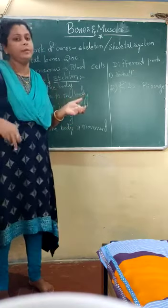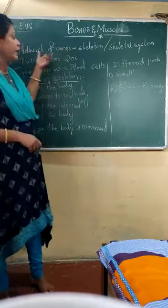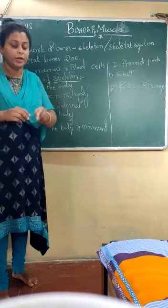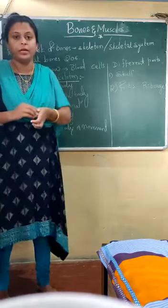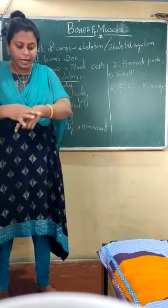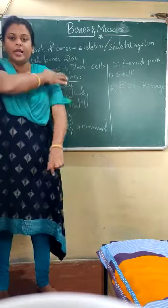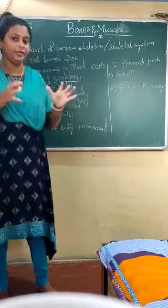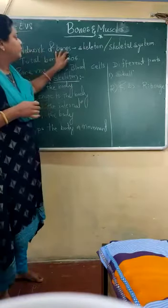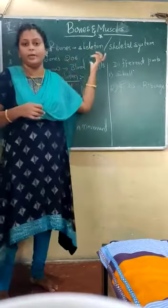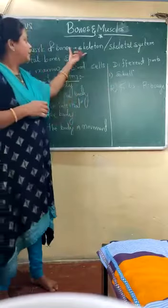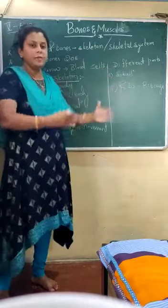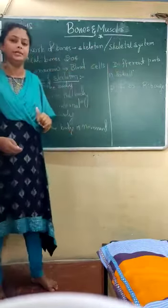The body is made up of different types of bones, and those bones are just like a network. They are attached — one bone is attached to another bone and another bone is attached to another. The bones are going to form a network-like structure. The network of bones is called the skeleton. The system of these networking bones is known as the skeletal system.